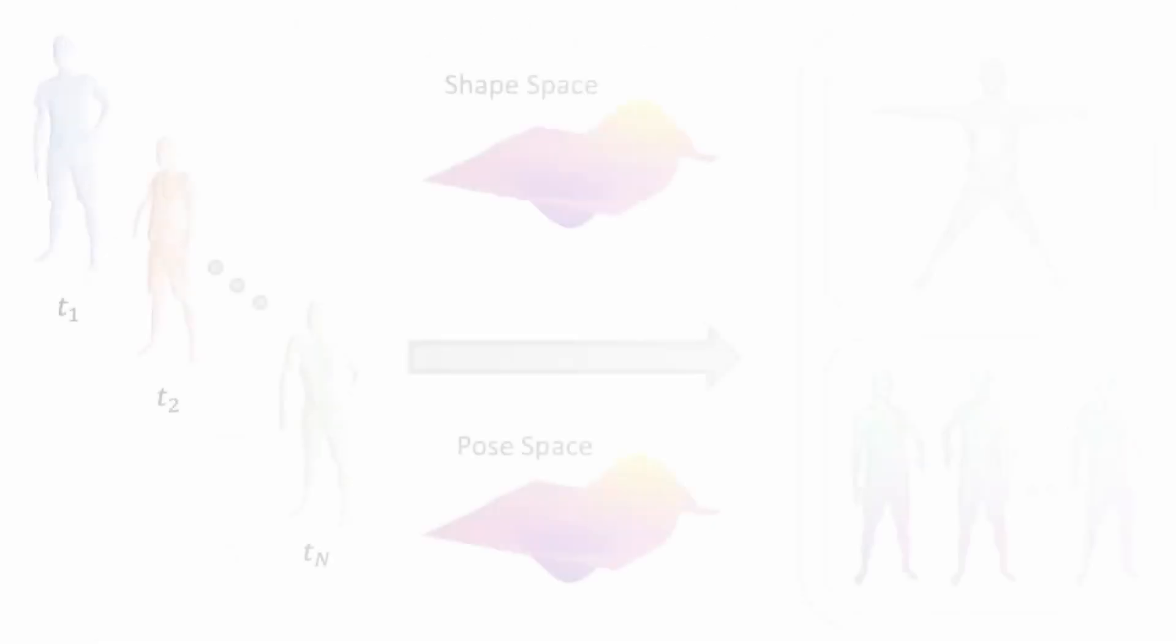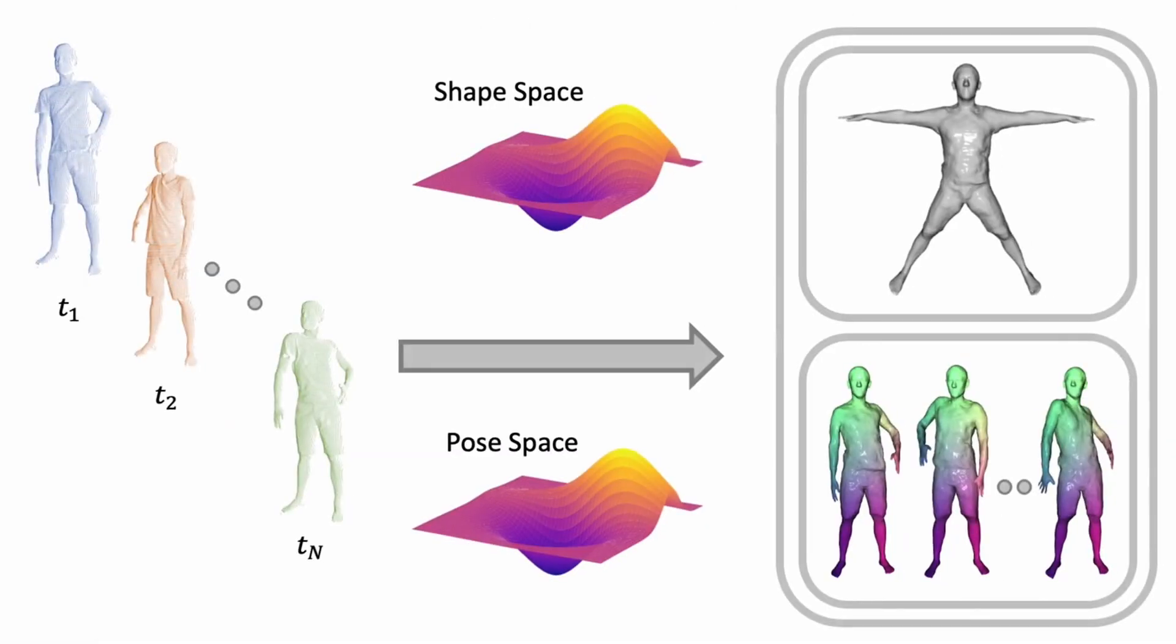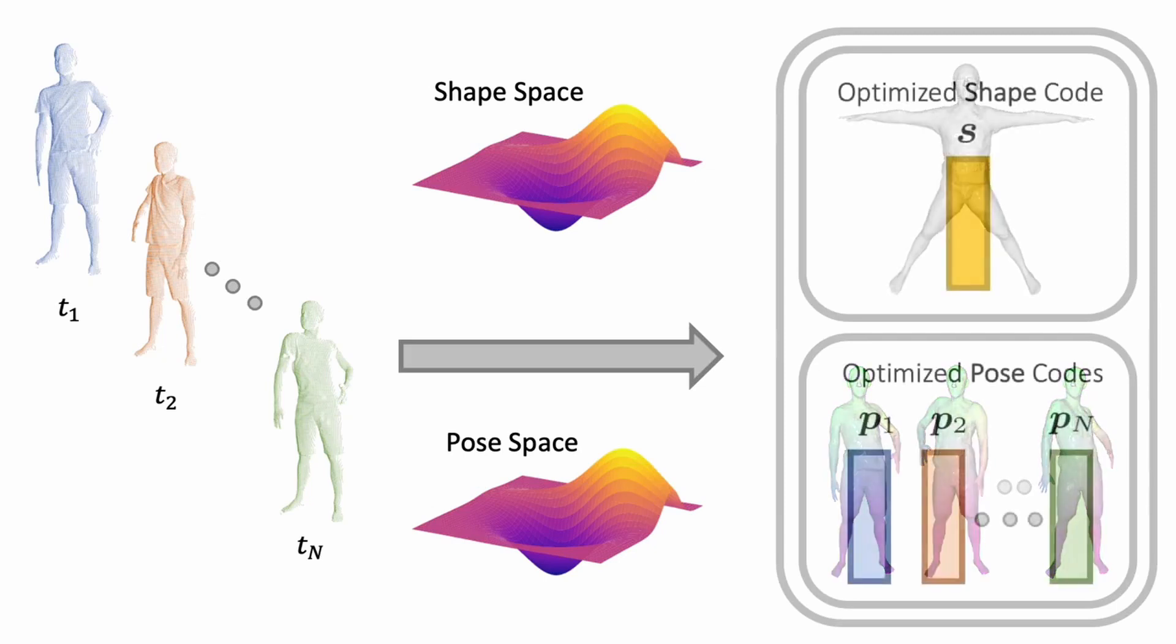Thus, fitting an NPM to an input sequence of N frames amounts to jointly optimizing for a single shape code as well as for N pose codes that best explain the observations.